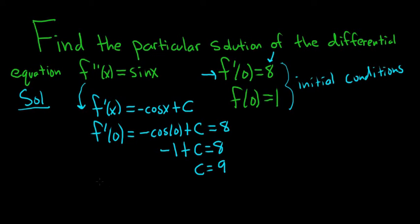Now we plug it back in. So we have f'(x) = -cos(x) + 9. That's our first derivative. Now we just integrate again.